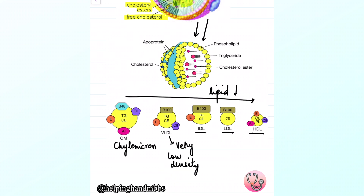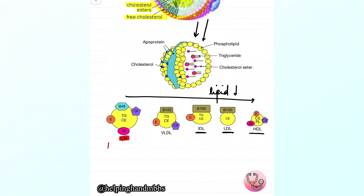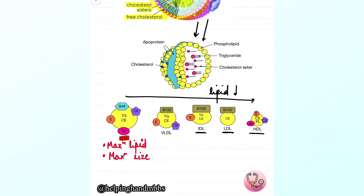As the lipid content keeps decreasing and the size keeps decreasing, the density keeps increasing, because the ratio of protein to lipid is changing. Chylomicron has the maximum lipid content among all lipoproteins, the maximum size, and hence the least density. More lipid means less density; less lipid means more density. Chylomicron also has the least protein content.